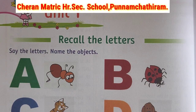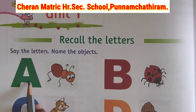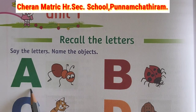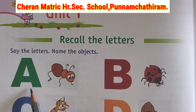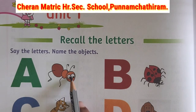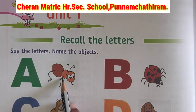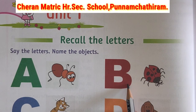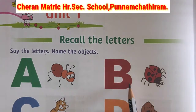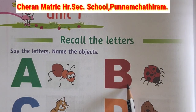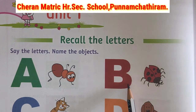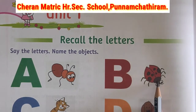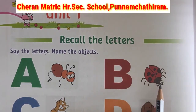Revise one time. What letter is this? Capital A. What letter is this? Capital A. A, ant. B, bug. What letter is this? Capital B. B, bug.